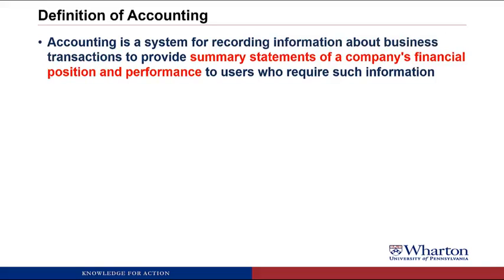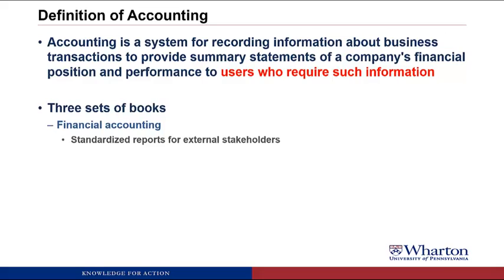The second part is about providing summary statements. Large companies have billions and billions of transactions every year. If they made them available to you in a gigantic database, your first question would be, how can I summarize all this into one or two summary numbers? And the third part focuses on users, because different user groups would want different summary numbers. So most companies have to keep three sets of books. Our focus in this course will be the first set of books, or financial accounting.